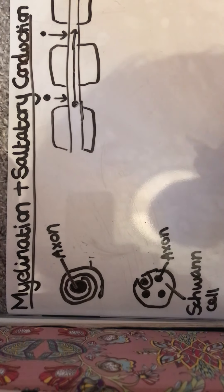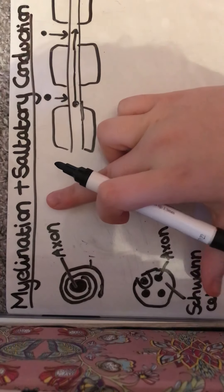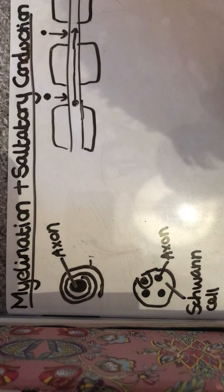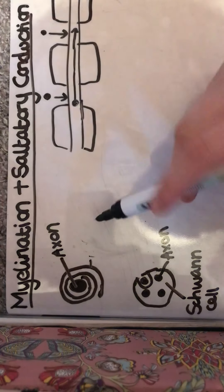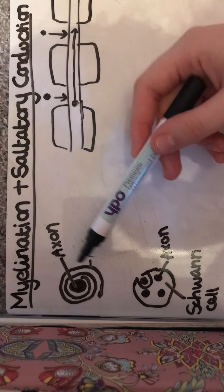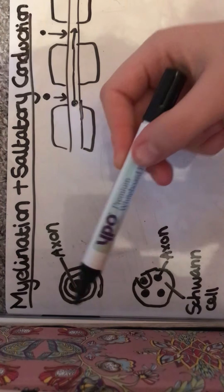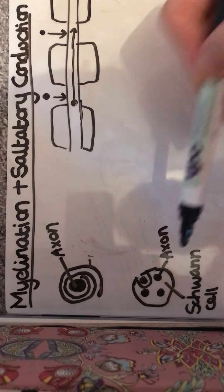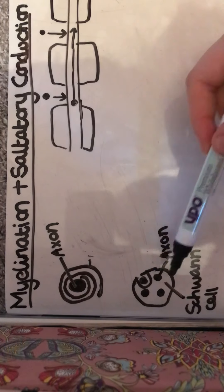Hello and welcome to a video on myelination of neurons and saltatory conduction. So this is a myelinated neuron and we can see the axon here, and this is a non-myelinated neuron with the axons in separate parts and throughout the Schwann cell.